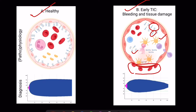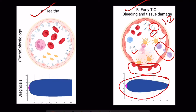Also, immune cells are activated and crosstalk with activated platelets. Trauma-induced coagulopathy is often defined as a prothrombin ratio greater than or equal to 1.2. Viscoelastic hemostatic assays during active bleeding may show a hypocoagulable profile without or with fibrinolysis, as illustrated here.